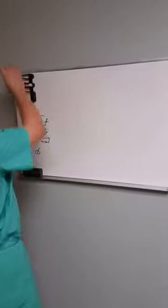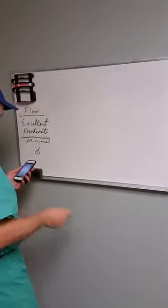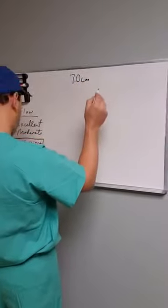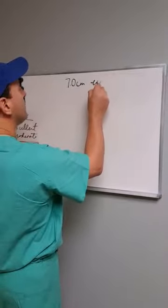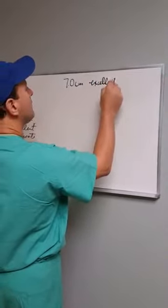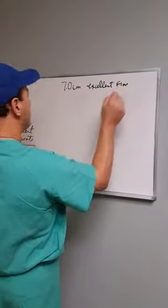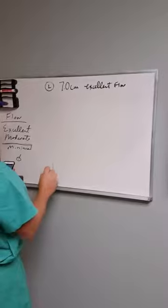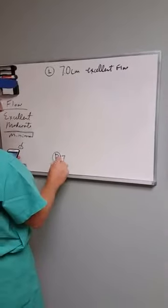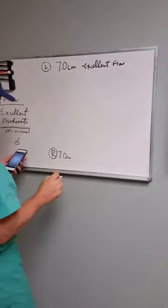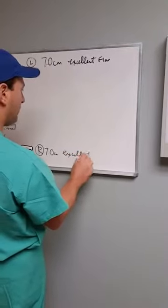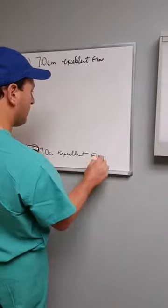Her total tubal length on her left-hand side was seven centimeters and the flow rate was excellent on that side. That's the left side. The right side she actually had the same tubal length, seven centimeters. Most of the time the tubes are a little bit different and she also had excellent dye flow through that right tube as well.